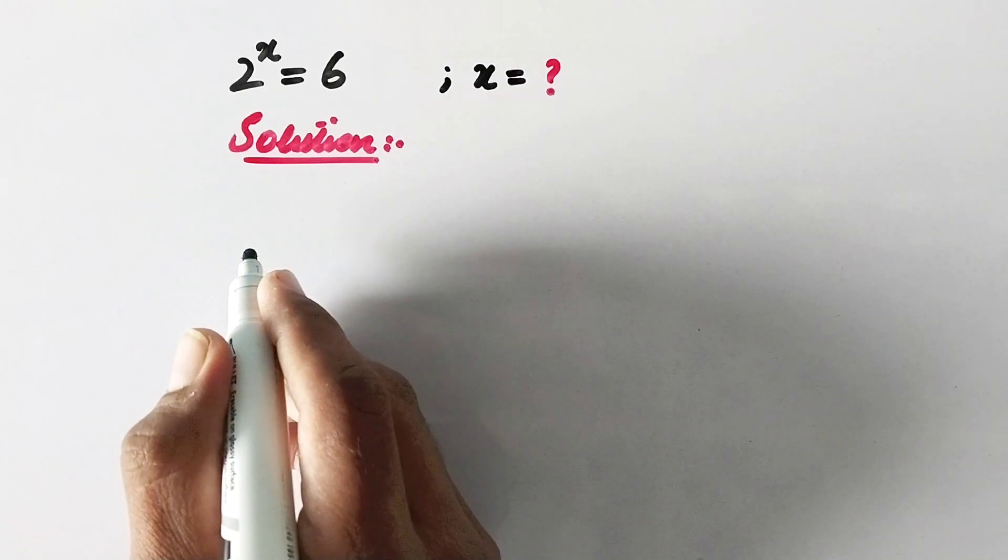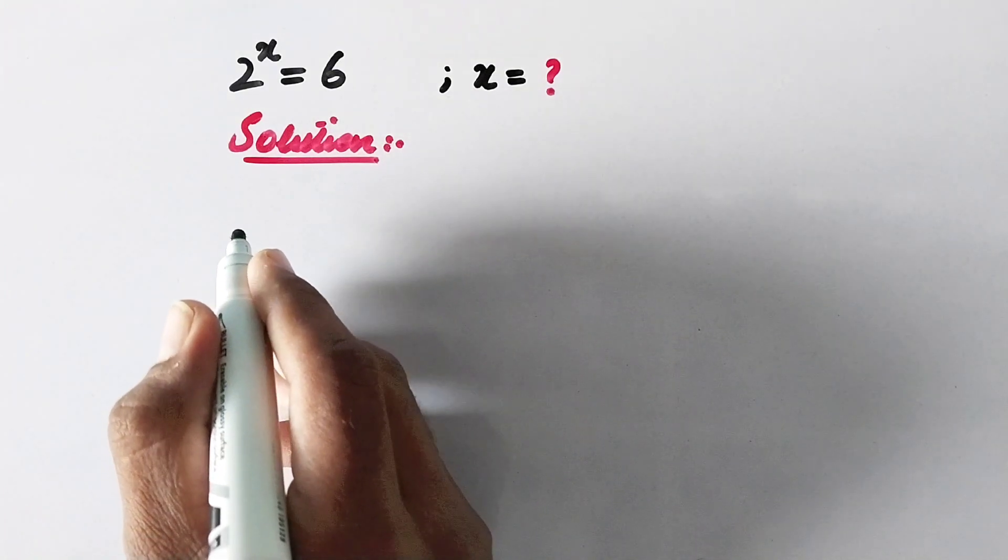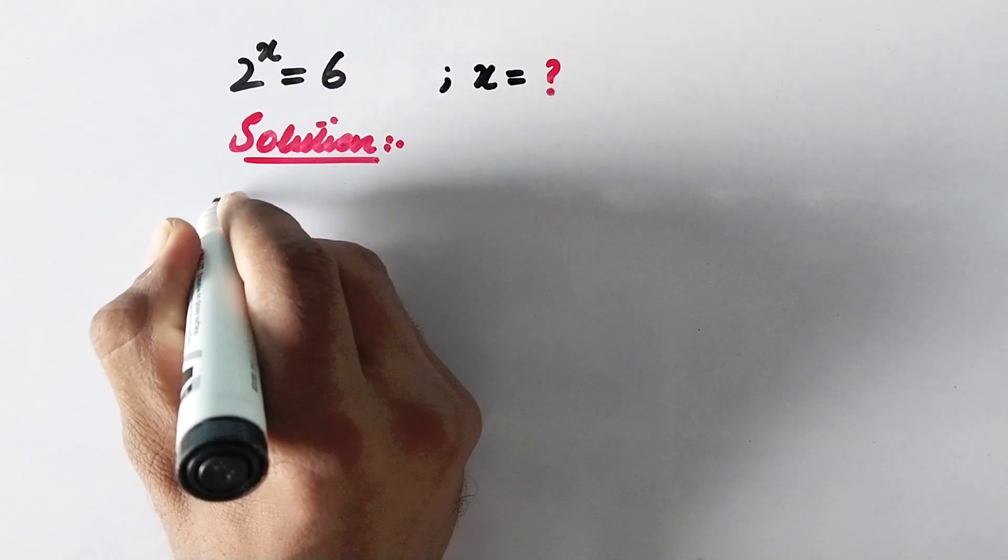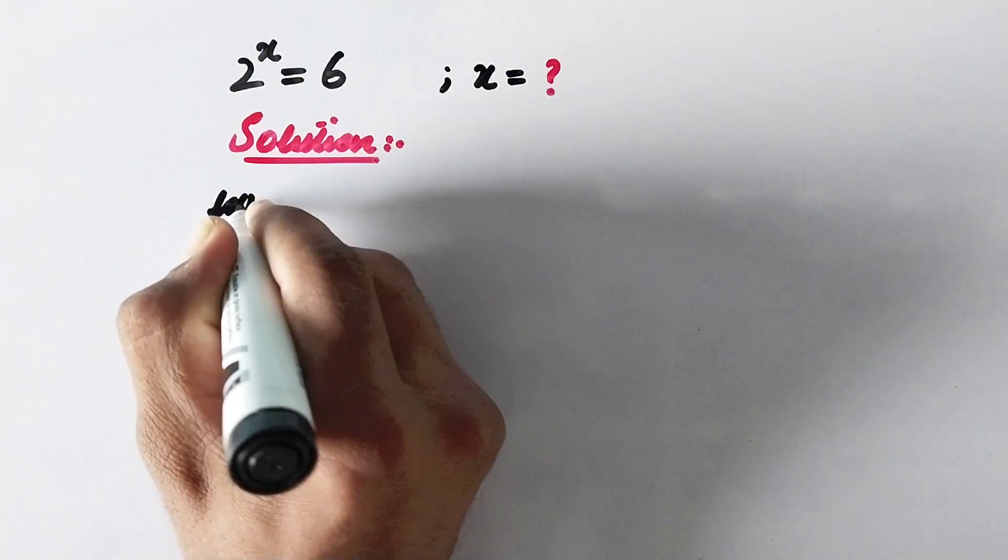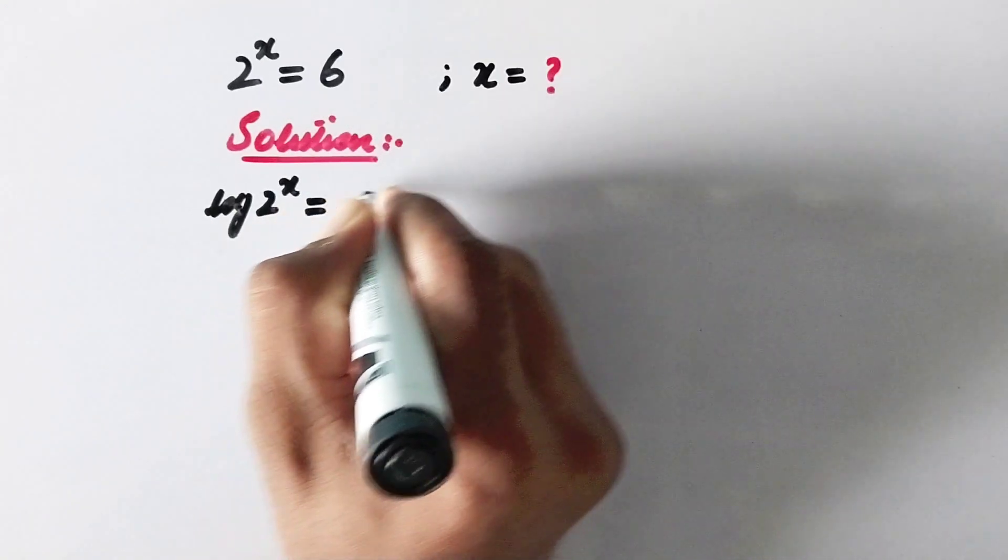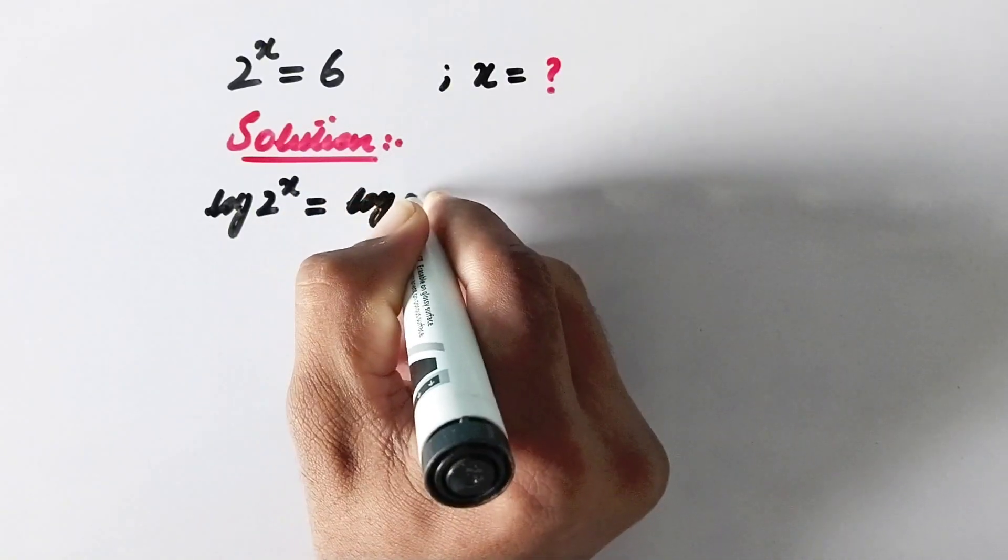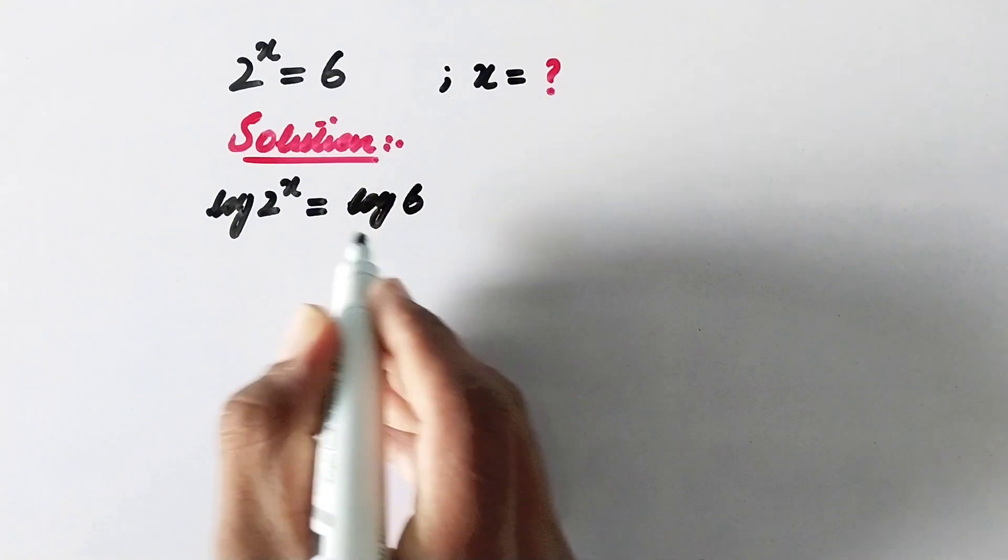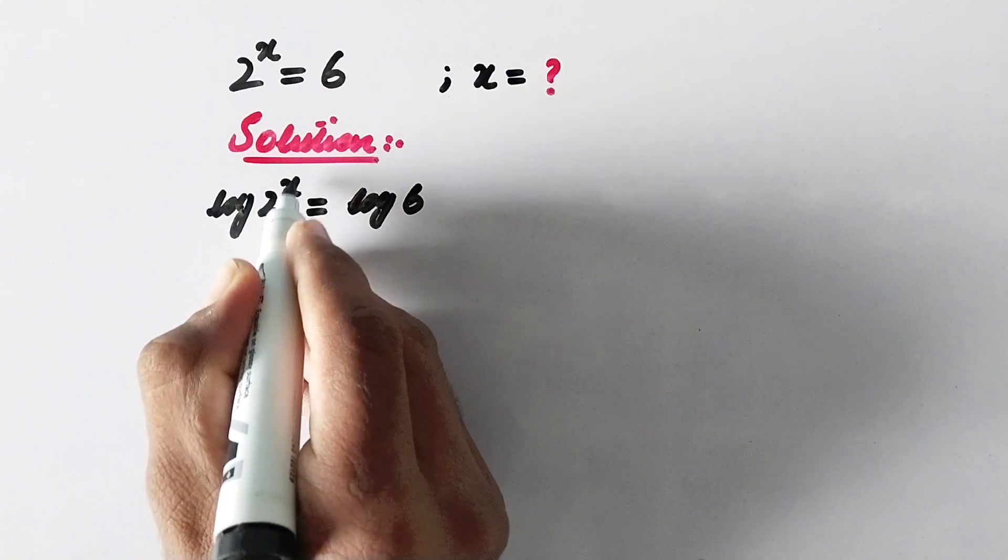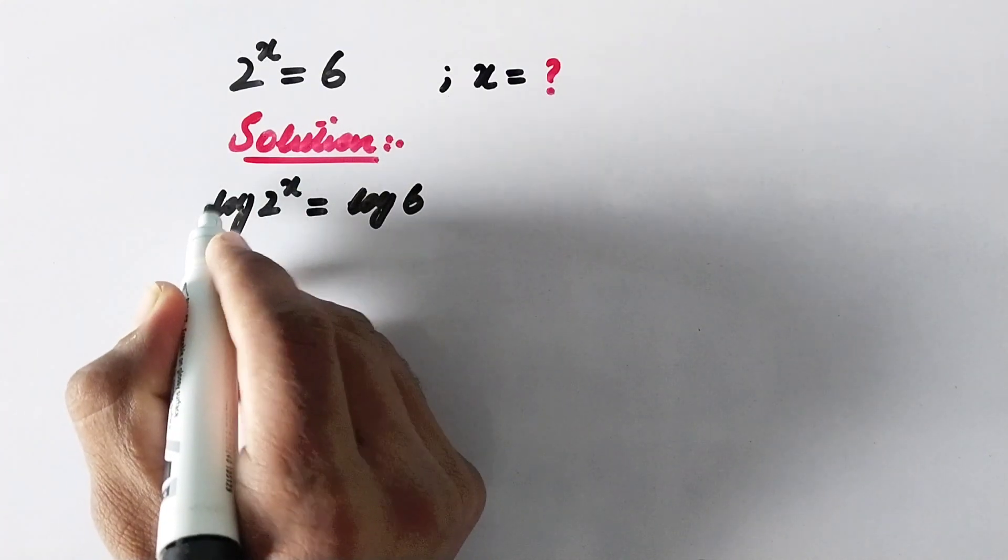Here in the first step we will take common log on both sides of the equation. So it will be log of 2 to power x is equal to log of 6. And as we know, it is the property of log that the power is before log.